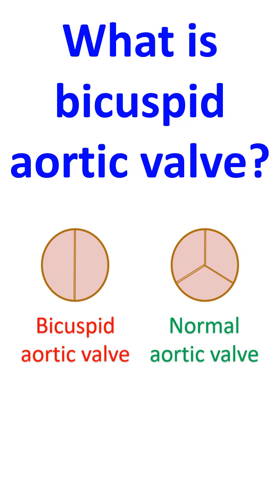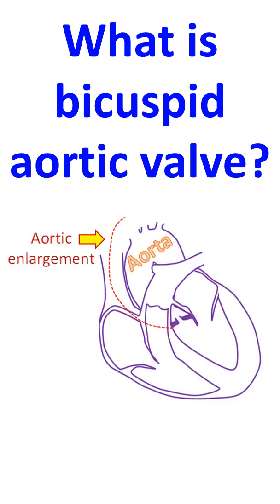Some patients without significant stenosis or regurgitation can be asymptomatic for long periods. In any case, those found to have a bicuspid aortic valve need long-term follow-up.